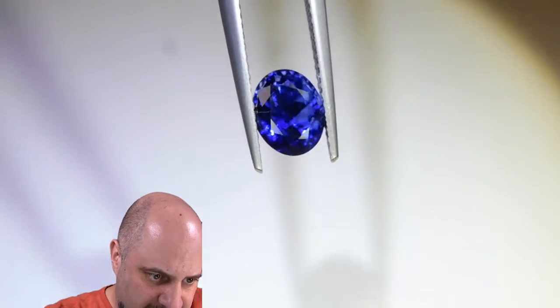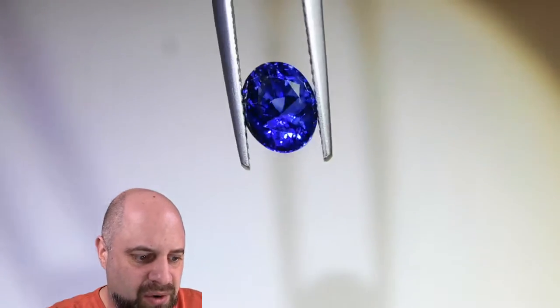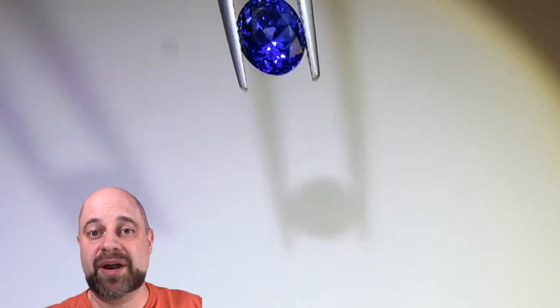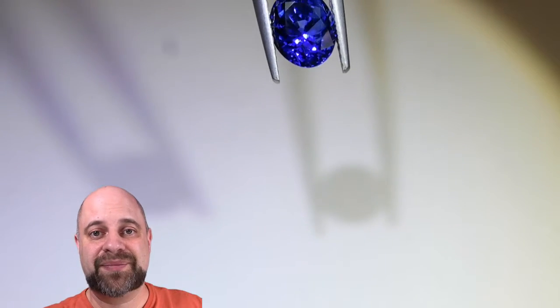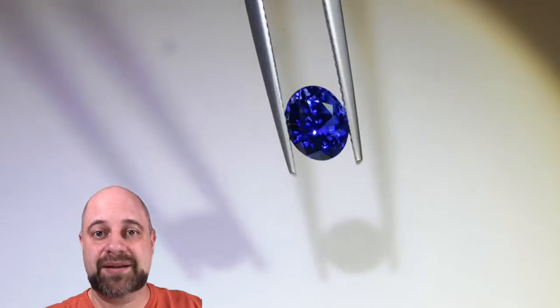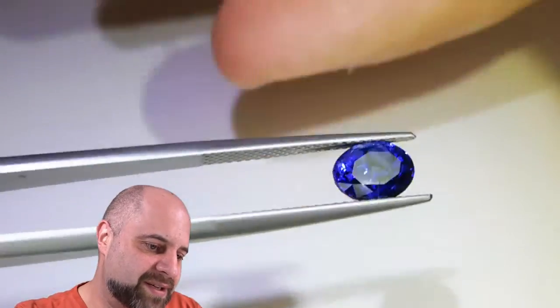There you go. And you can see the inclusions are much more prominent this way than it was the other way. So we call it a pendant stone because if it's facing the right way, it looks great. If it's not, it doesn't look as great. So that's why you put it on a pendant and it's always going to be looked at the same way every single time. That's why we call it a pendant stone.